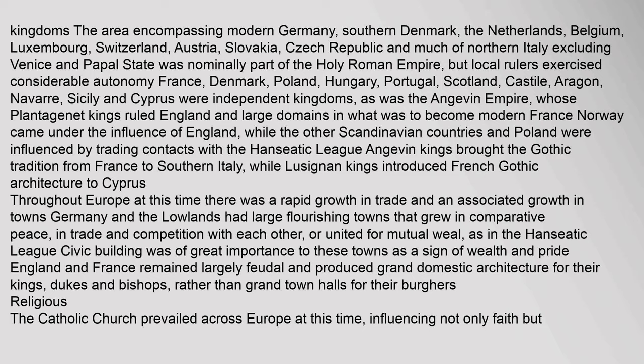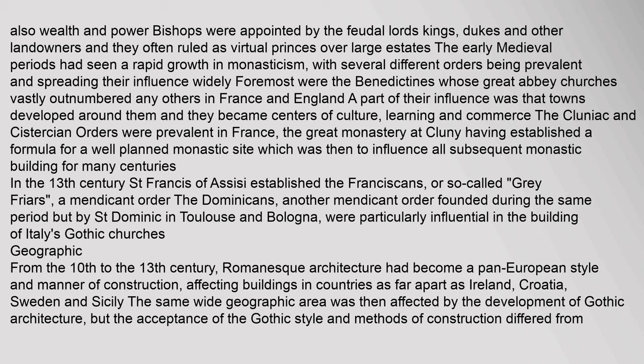The Catholic Church prevailed across Europe at this time, influencing not only faith but also wealth and power. Bishops were appointed by the feudal lords, and they often ruled as virtual princes over large estates. The early medieval periods had seen a rapid growth in monasticism, with several different orders being prevalent. Foremost were the Benedictines, whose great abbey churches vastly outnumbered any others in France and England. The Cluniac and Cistercian orders were prevalent in France. In the 13th century, Saint Francis of Assisi established the Franciscans, while the Dominicans were particularly influential in the building of Italy's Gothic churches.